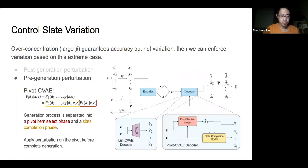So we propose to apply perturbation before the majority part of the generation, which is a pre-generation perturbation method. Mechanically, we can separate the generation process into two phases. First, we select a pivot item for a certain position. Then we complete the slate based on the pivot. The separated model is mathematically equivalent to the original model in the probabilistic view. So without perturbation, this method behaves almost identical to the original model.